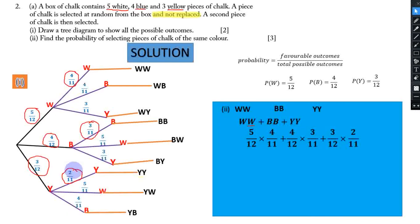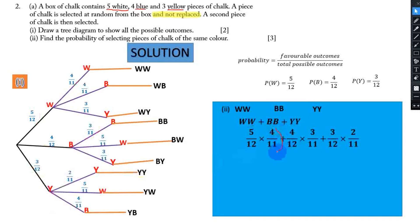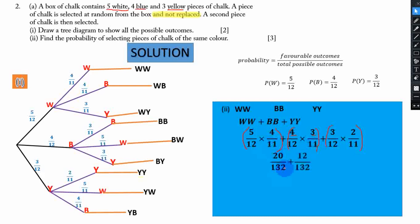Multiplying: 5 × 4 = 20 and 12 × 11 = 132, giving 20/132. Then 4 × 3 = 12 over 132, giving 12/132. Then 3 × 2 = 6 over 132, giving 6/132. Now we find the common denominator, which is 132, and add the numerators: 20 + 12 + 6 = 38, giving 38/132.